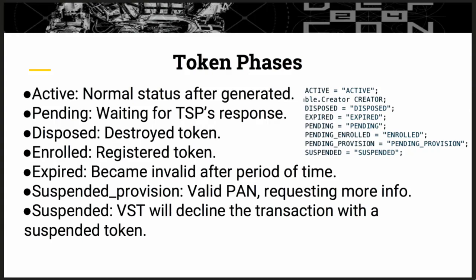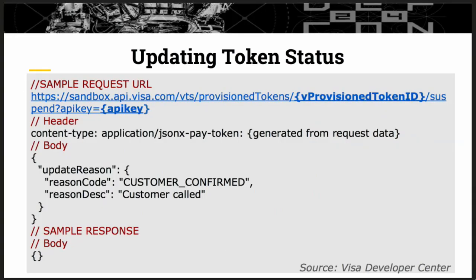Let's talk about the token phases or status. Like any other transactions, the tokens of Samsung Pay have different statuses: active, pending, disposed, expired after a period of time, and suspended. According to the Visa Developer Center, a tokenization process provider updates tokens using a provisioned token ID and also an IP key in JSON format. Please keep this slide in mind as we are going to use it in the next example.